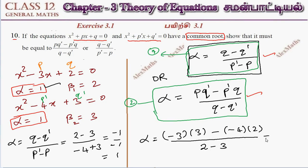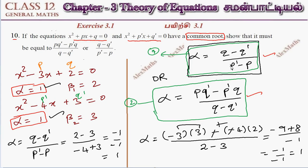Looking at the numerator: this is minus 9, this is minus 1, giving plus 8. Divided by denominator minus 1, again minus 1 by minus 1 is 1. So this is the common root alpha — the same value. Just as our formula gives, the common root equals this value. This confirms the condition: the common root is equal to either expression. We have proved it with this example.